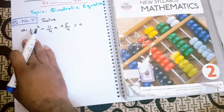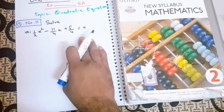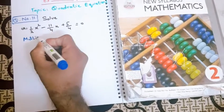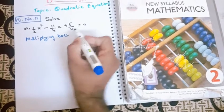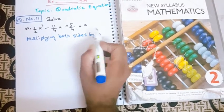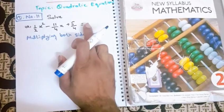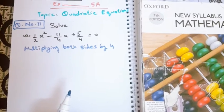I would like to tell you that we can remove all of these denominators by multiplying both sides by 4. Multiplying both sides means the left hand side of the equal sign and the right hand side of the equal sign.